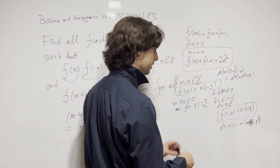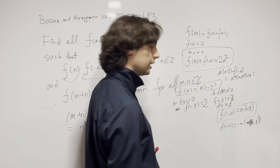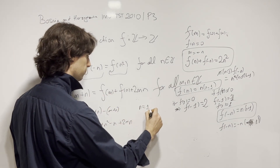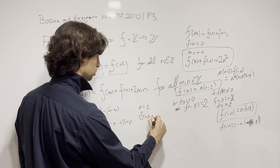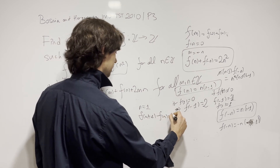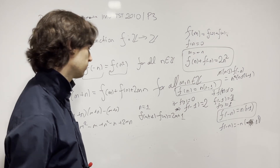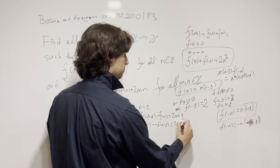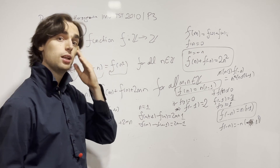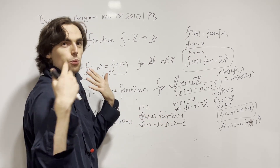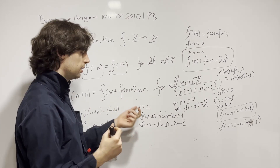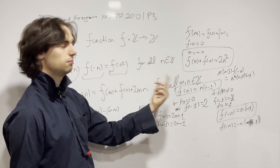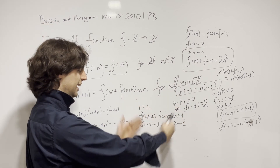Now let's look at the case where f(-1) = 1 and f(1) = 1. We do the same thing: plug in n=1 to get f(m+1) - f(m) = 2m+1. Writing the telescoping sum: f(2)-f(1)=3, f(3)-f(2)=5, and so on. This approach lets the intermediate terms cancel out immediately.